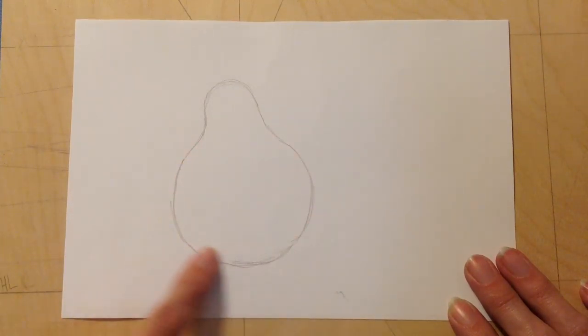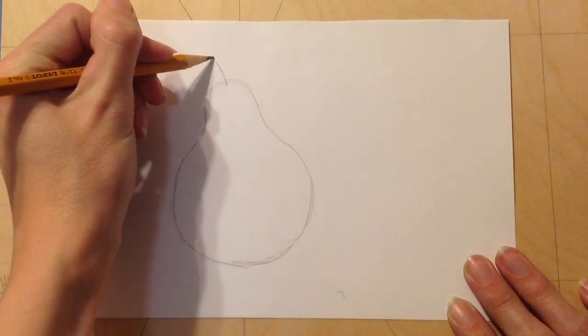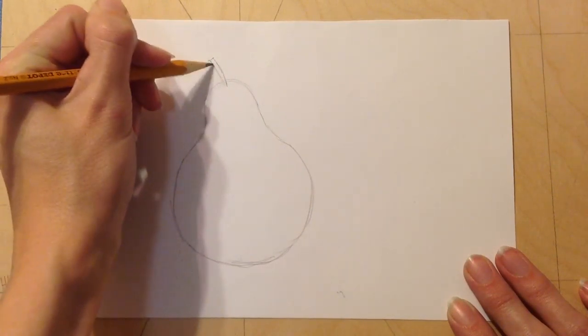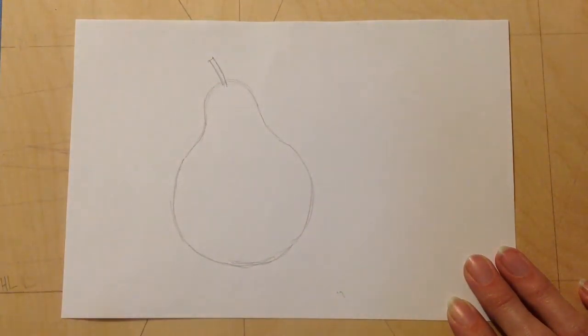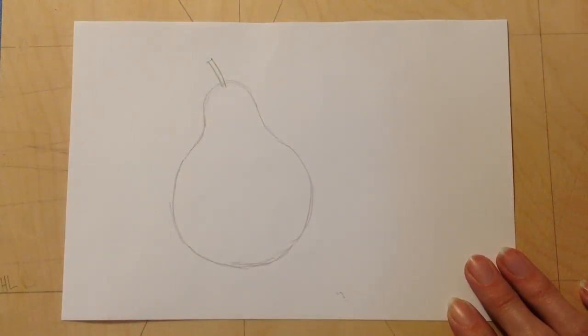Some are even actually really round, like a sphere. And I'll put a little stem on the top. Just give it a couple of lines so it has a thickness to it.